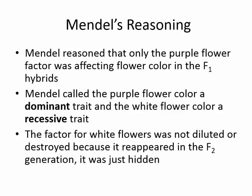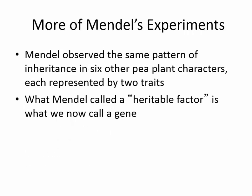The factor for white flowers was not diluted or destroyed, because it reappeared in the F2 generation. Mendel also observed the same pattern of inheritance in six other pea plant characters, each represented by two traits — so he didn't just do flower color. What Mendel called a heritable factor is now what we call a gene.